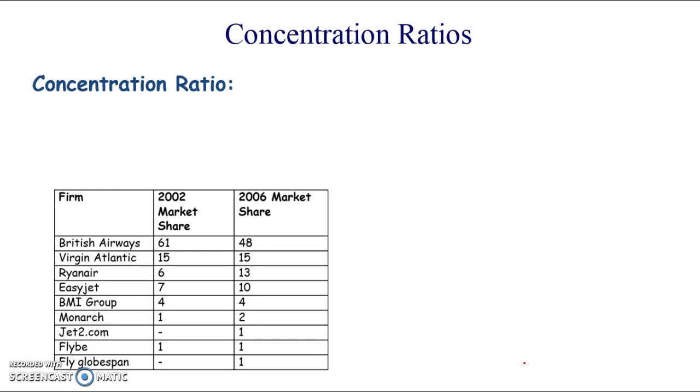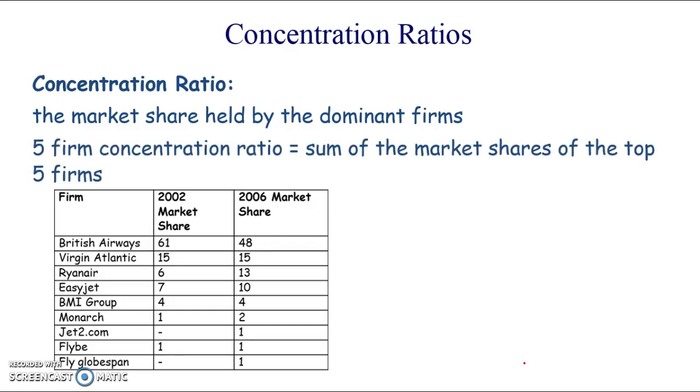OK, here's another important definition coming up, concentration ratio. And this is the market share held by the dominant firms in a market. And we can have any number, actually. Here I've got five firm concentration ratio. And this would just be the sum of the market shares of the top five firms.